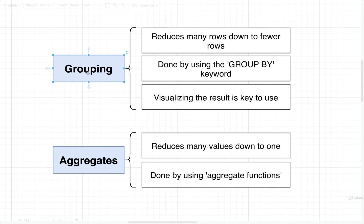With grouping in particular, we're going to write a query that selects or somehow obtains many different rows, and then group those rows down to a fewer or lesser number of rows. So the result of grouping is rows, and we execute grouping by using the GROUP BY SQL keyword.